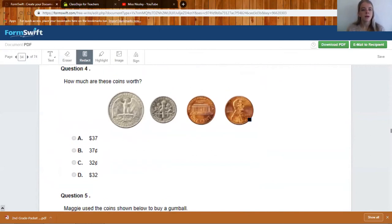Number four, how much are these coins worth? 25 plus 10 is 35. 35 plus one is 36. 36 plus one is 37 cents. These top two both say 37, but make sure you marked B because we don't have 37 dollars, just 37 cents.